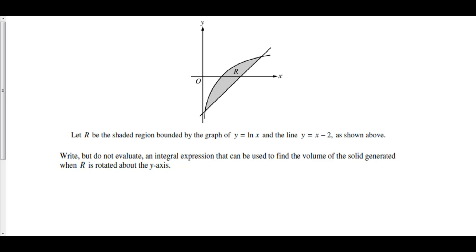Let R be the shaded region bounded by the graph of y equals the natural log of x and the line y equals x minus 2, as shown above. Write, but do not evaluate, an integral expression that can be used to find the volume of the solid generated when R is rotated about the y-axis.